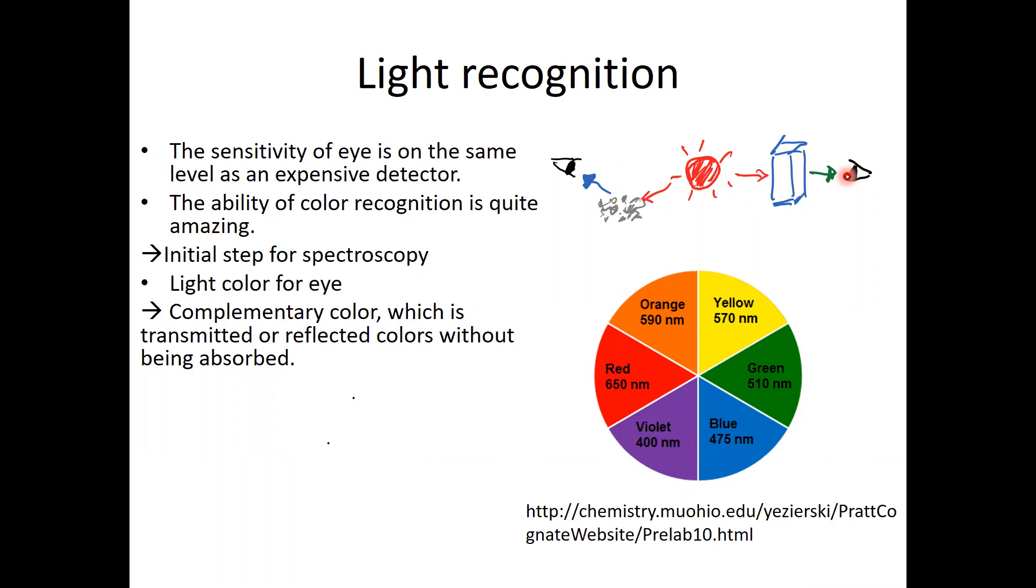This thing you are seeing is called complementary color. What is transmitted or reflective color, reflective colors without being absorbed. What I mentioned is the sunlight is basically has many broad wavelengths region, meaning white light. What you are seeing by reflecting or transmitted is basically the rest of the color not absorbed by the materials. This is called as a complementary color.